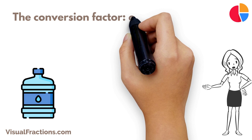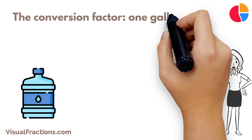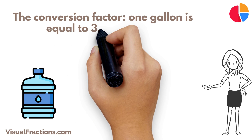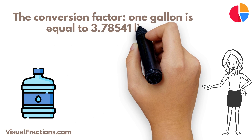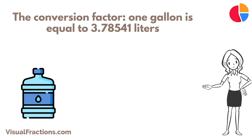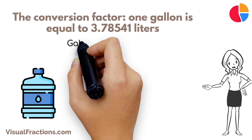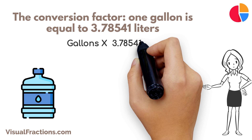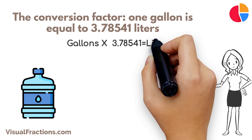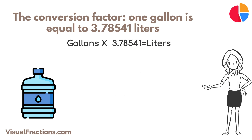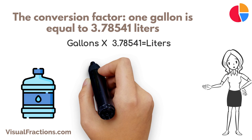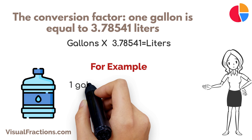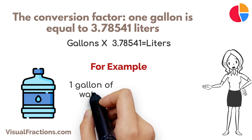First, let's review the conversion factor. One gallon is equal to approximately 3.78541 liters. To convert gallons to liters, all you need to do is multiply the number of gallons by the conversion factor. Let's walk through an example.